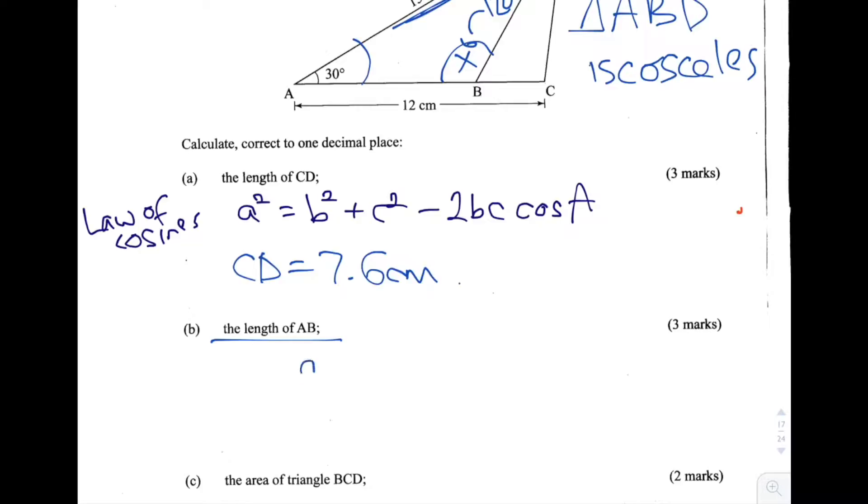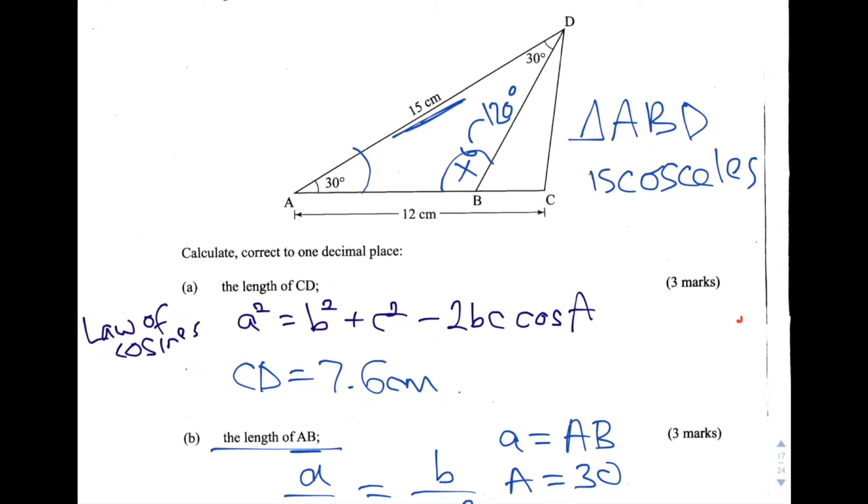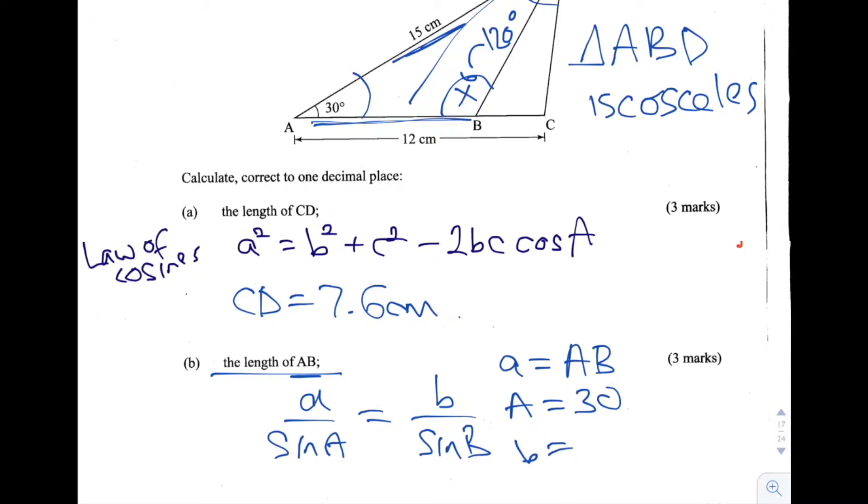So using the law of sines, A over sine A equals B over sine B. What we're going to do now is substitute in the values. First, we have our AB, the length we're trying to find. Our capital A is going to be 30 degrees, because the angle that's directly opposite to AB is 30 degrees. Our small b is going to be the length, 15 centimeters, and our capital B is going to be 120 degrees, which is the angle we worked out.